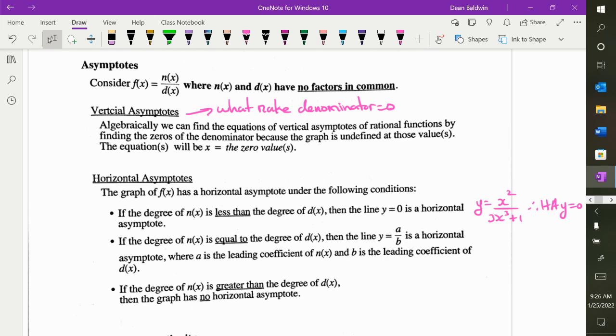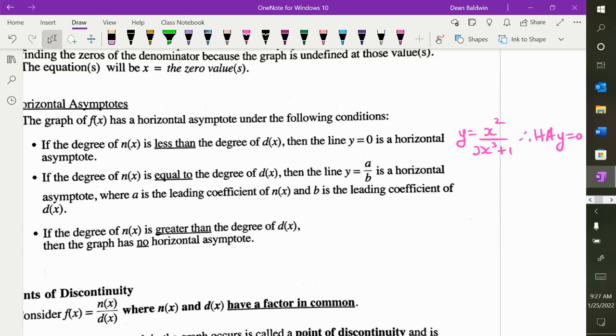If the degrees are equal, what do we look at? Leading coefficients. So if the degrees are equal, for example, if I have y is equal to 4x squared plus one over 7x squared minus 10, those degrees are the same. So what's my horizontal asymptote? 4 over 7.